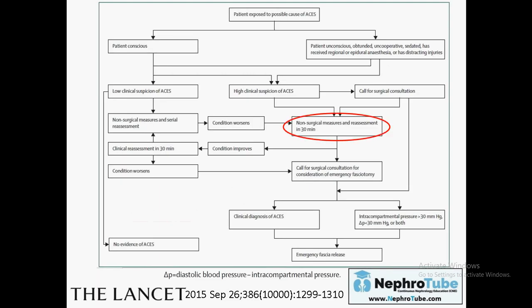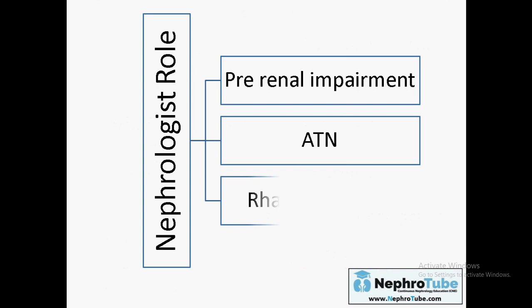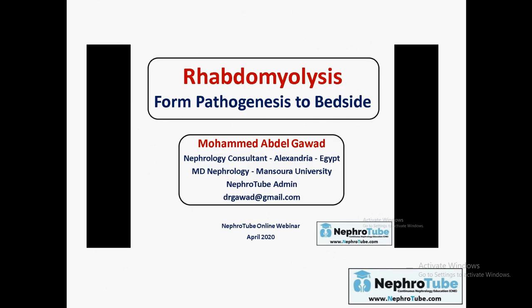Treatment starts with non-surgical techniques, but if the pressure inside the muscle remains very high, emergency fasciotomy — fascial release — may be needed to decrease the pressure inside the muscle. The nephrologist's role is to check the patient for the possibility of pre-renal impairment, acute tubular necrosis, and to treat rhabdomyolysis. You can check our rhabdomyolysis lecture on YouTube and NephroTube, with links to different lectures at nephrotube.com.